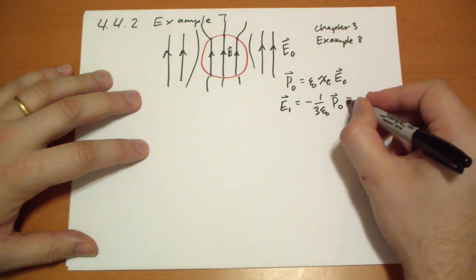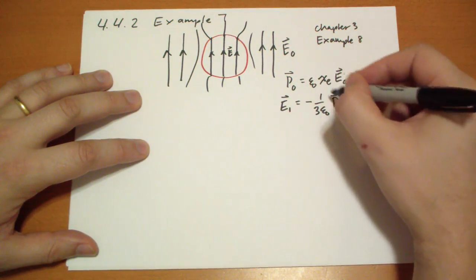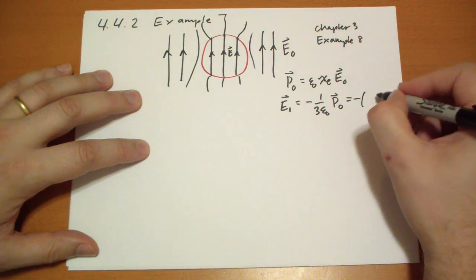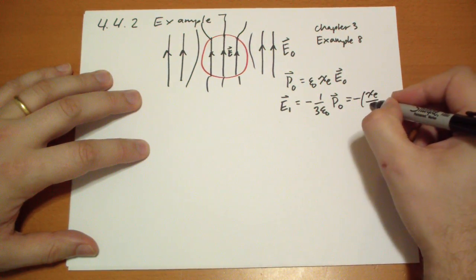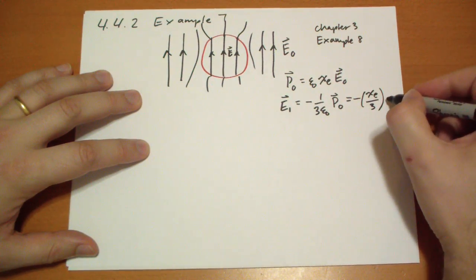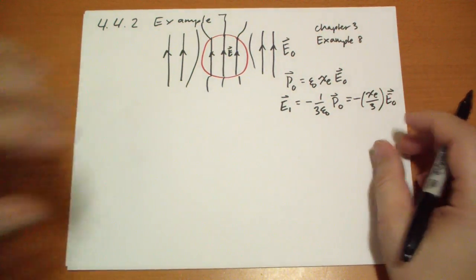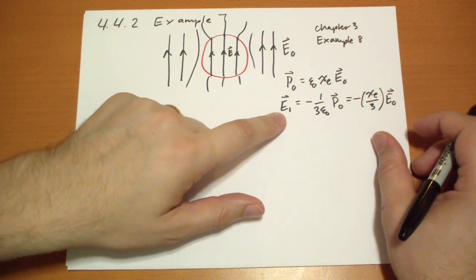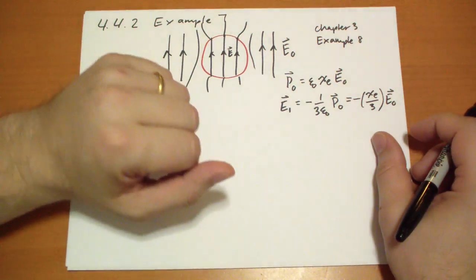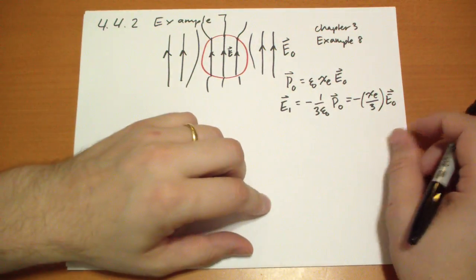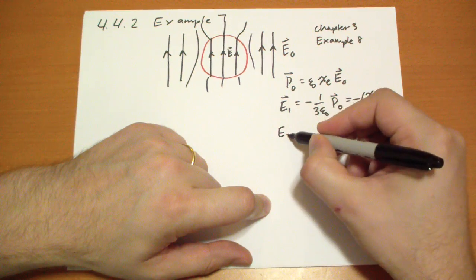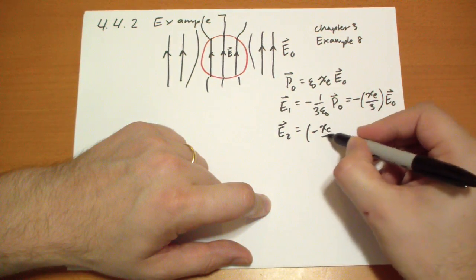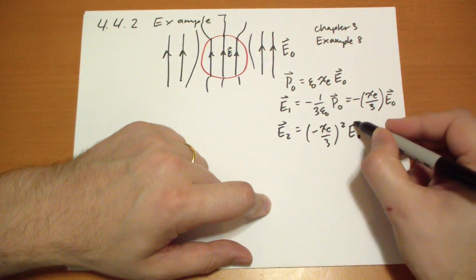And that's going to be equal to, plug in this original term here, we get minus χₑ over 3, the susceptibility divided by 3, of the original electric field. So if you were to see what this new electric field would produce in terms of polarization, and what the resulting electric field from that new polarization would be, you just basically do what you just did, and you end up with negative χₑ over 3 squared times the original electric field.